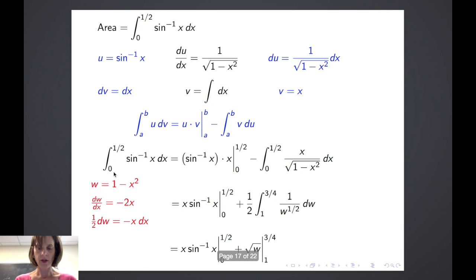We can finish out that integral on the right hand side and then we evaluate. And when we do, we get the area under the curve y equals the inverse sine of x on the interval from 0 to 1 half is pi over 12 plus the square root of 3 fourths minus 1.